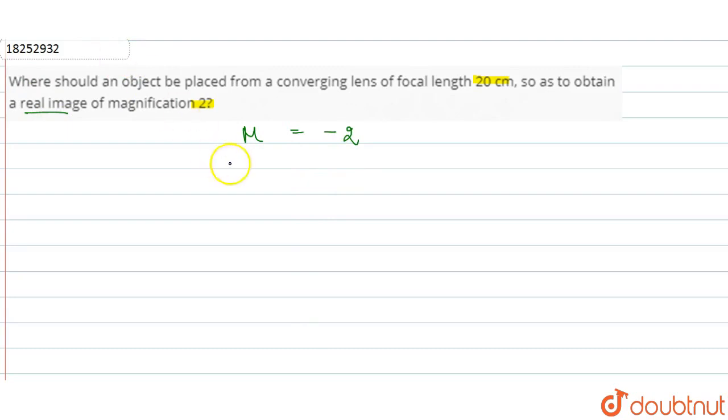Now what is magnification? Which is equal to minus v upon u. And what is given? Focal length is given, i.e. how much focal length? 20 cm.